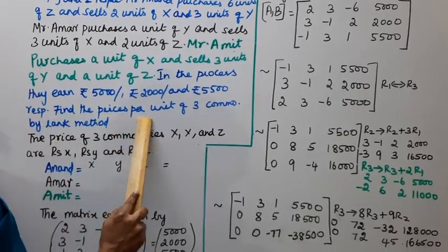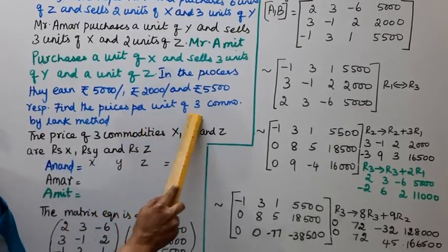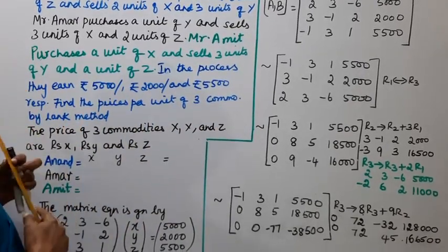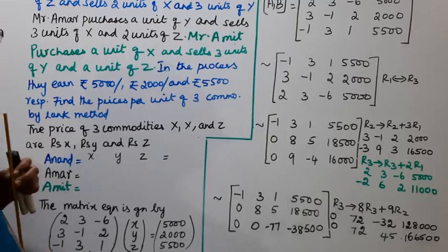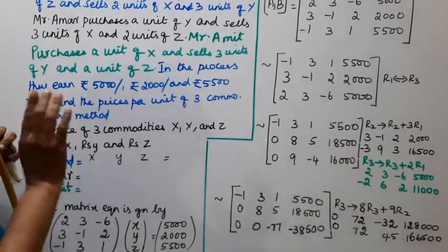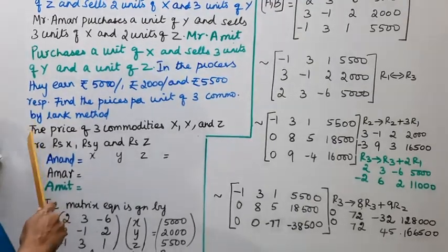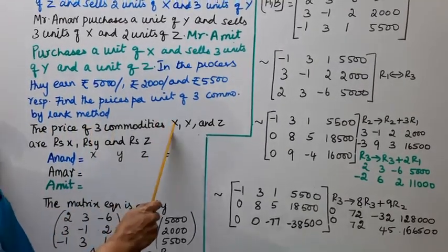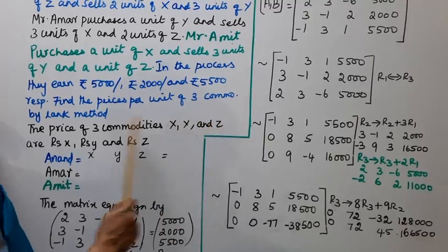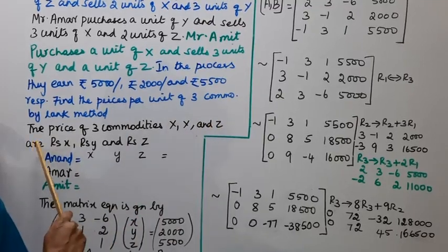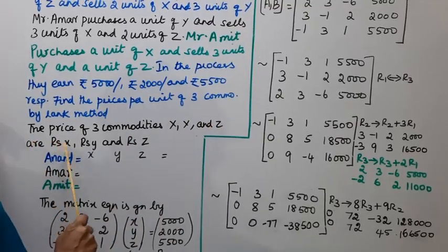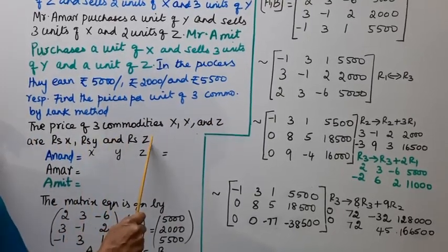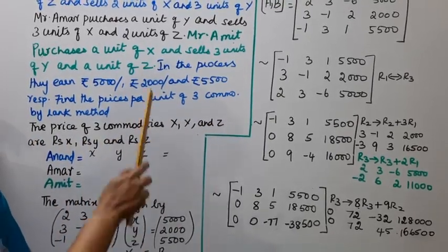Find the prices per unit of the 3 commodities by the rank method. The price of 3 commodities X, Y, Z — we denote them as Rupees X, Rupees Y, and Rupees Z.